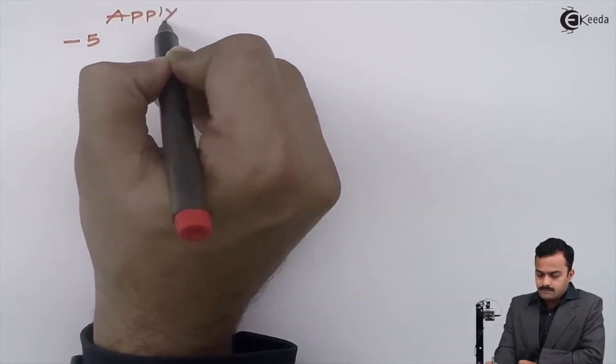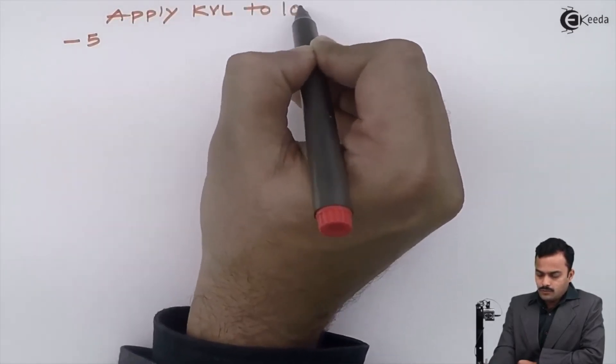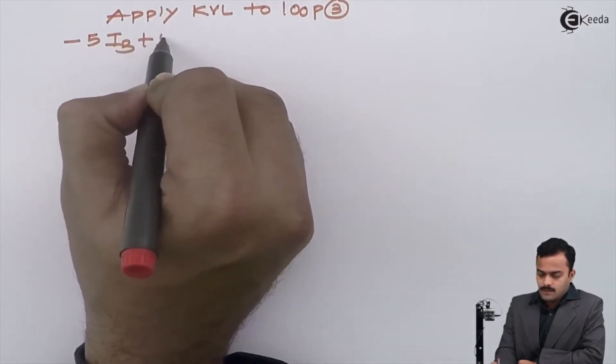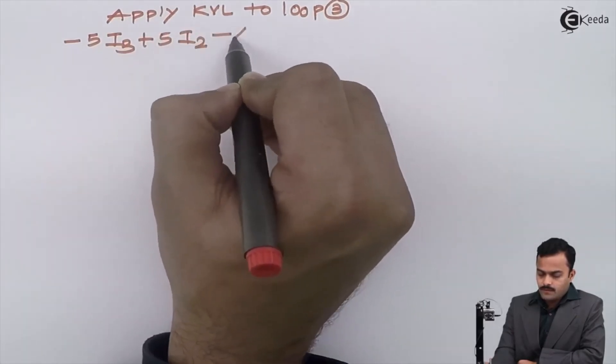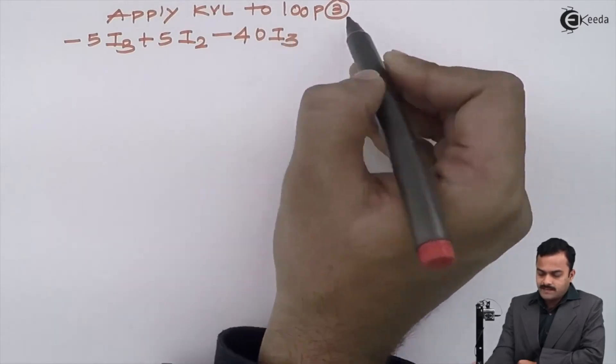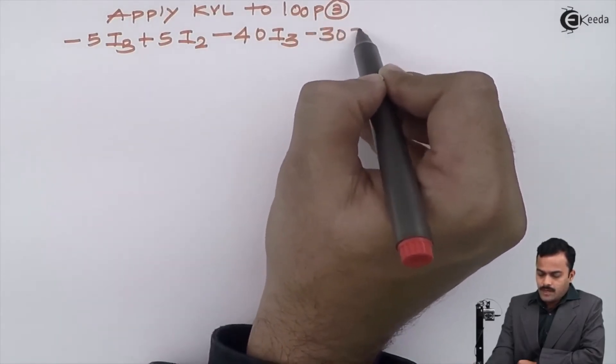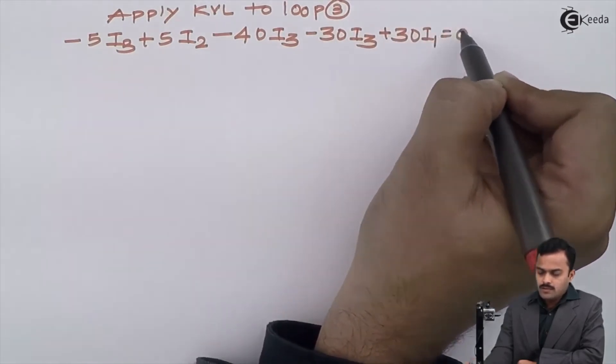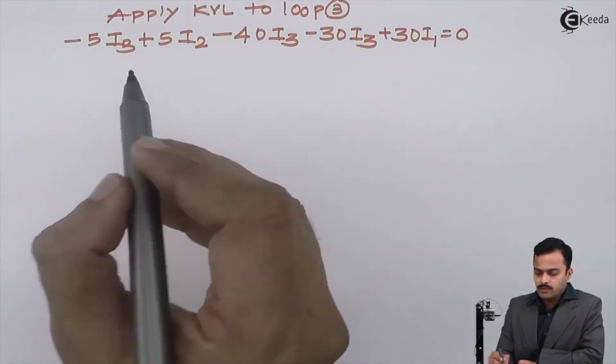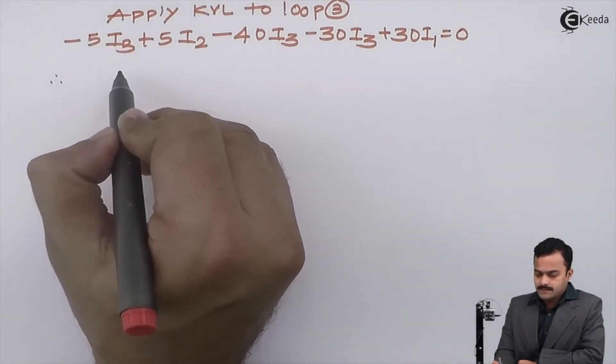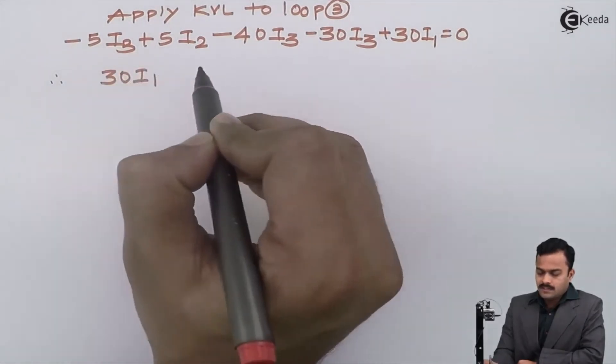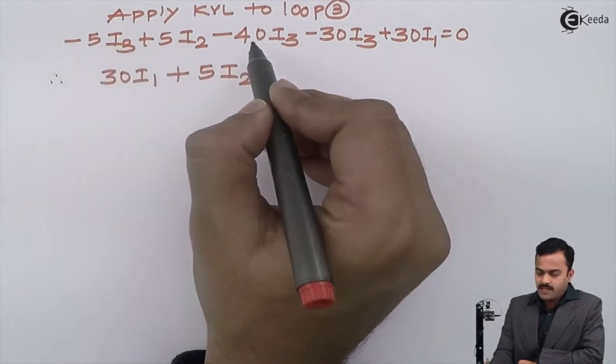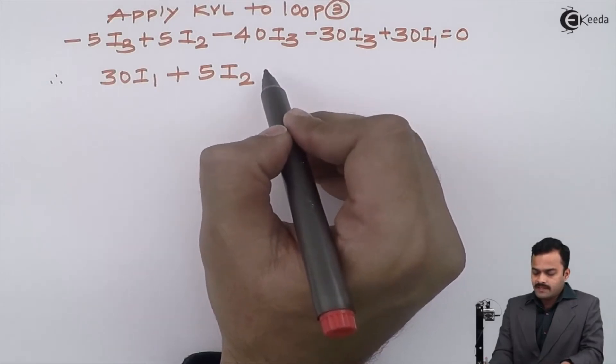I will have minus 5 I3 plus 5 I2, minus 40 I3, minus 30 I3 plus 30 I1 equal to zero. I am not having any voltage source in this particular loop. So after simplifying, I will get 30 I1 plus 5 I2, minus 5 minus 40 minus 30 will become minus 75 I3 equal to zero, equation number three.